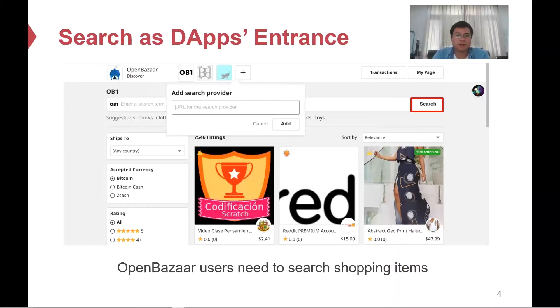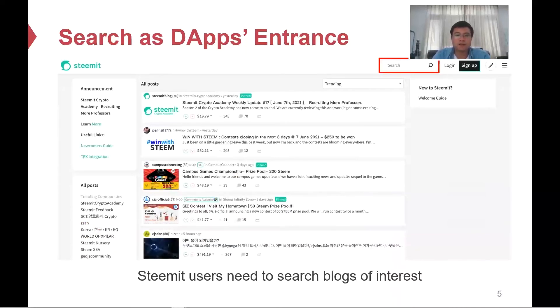For example, OpenBazaar is an e-commerce marketplace built on top of a peer-to-peer network and storage. To help users search for ideal shopping items, OpenBazaar allows third-party search engines to crawl and index shopping items. Without search, the user has to scan the network herself. Another example is Steemit, a very popular social media platform, much like Twitter, but which stores short blocks on the public Steem blockchain. Likewise, Steemit users often search blocks of their interest to navigate their social media.